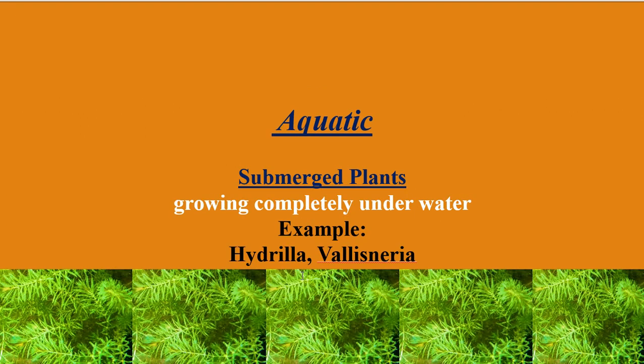The next category is submerged plants. Submerged plants are the plants which prefer to grow completely under the water bodies or water level. An example is Hydrilla, and this is the picture which indicates the Hydrilla plant.